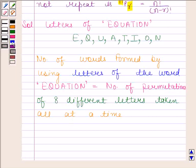So, by using theorem 1, number of permutations of 8 different letters taken all at a time is equal to 8P8.